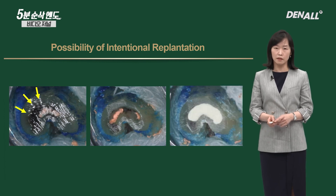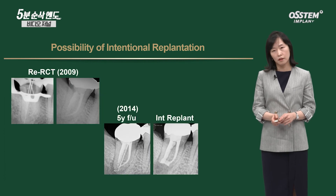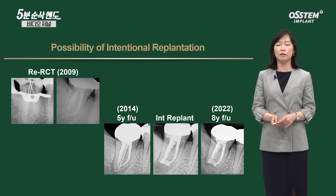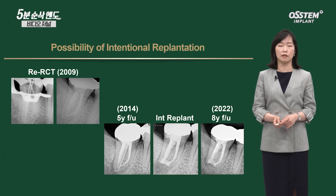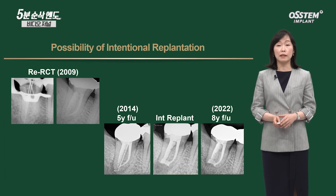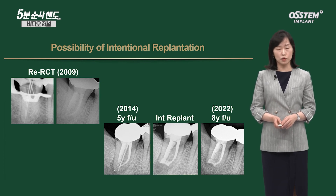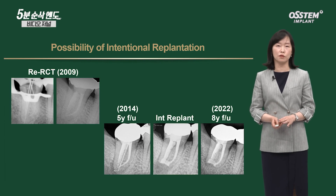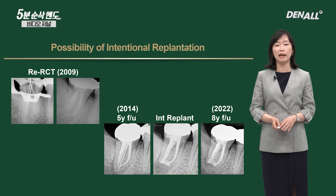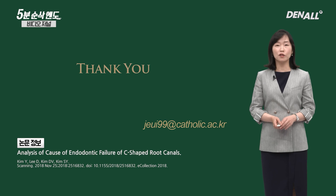I removed it thoroughly and MTA was used to do retrofilling. The patient came in recently — it has been 8 years since surgery — and continues to do well without major problems. What I want to emphasize is that when we do endodontic treatment or re-endodontic treatment on C-shaped root canal, we need to do our best. At times, intentional replantation may be necessary due to the structure of C-shaped root canal. I always tell the patient of the possibility of surgery. Thank you for watching.